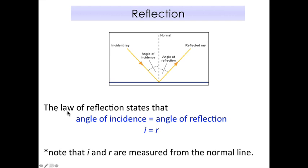Now, what does the law of reflection say? Every time light is reflected, it follows a certain pattern. After many experiments, this was confirmed as a law. The law of reflection states that the angle of incidence is always equal to the angle of reflection. We write the angle of incidence as 'i' and the angle of reflection as 'r', so in short: i equals r. Both i and r are measured from the normal line.